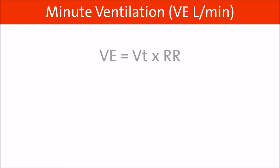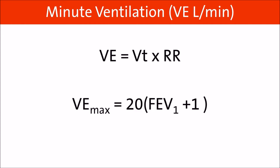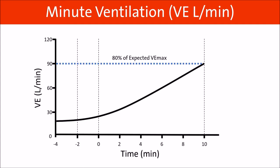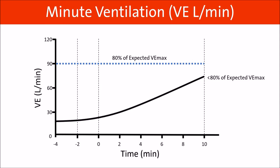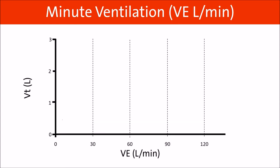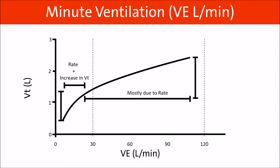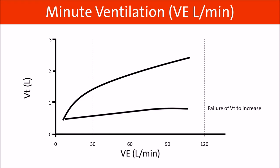Minute ventilation is the amount of air inhaled and exhaled in one minute. The formula for estimated maximum minute ventilation is 20 times FEV1 plus 1. Our goal is to reach 80% of your maximum minute ventilation. Reaching greater than 80% is called low reserve and indicates respiratory dysfunction. Not being able to reach 80% indicates a possible cardiac limitation to exercise capacity. The increase in minute ventilation is initially due to rate and tidal volume; as testing progresses, tidal volume doesn't increase much and increases in ventilation are due to rate. Failure of tidal volume to rise suggests lung disease.